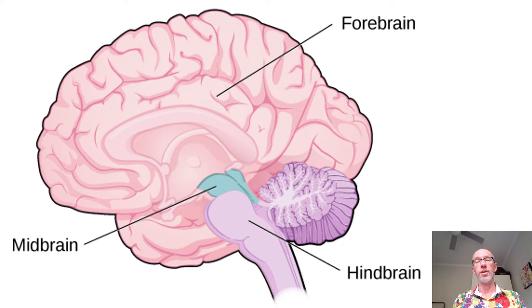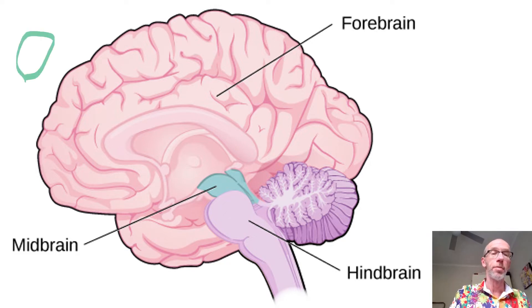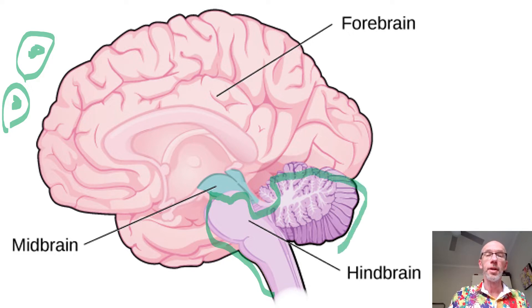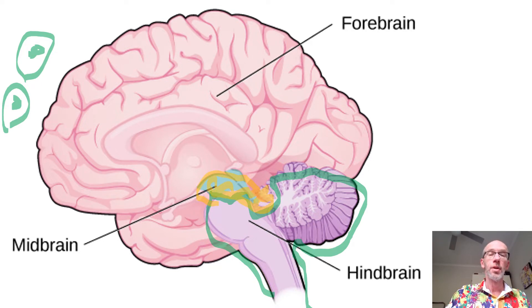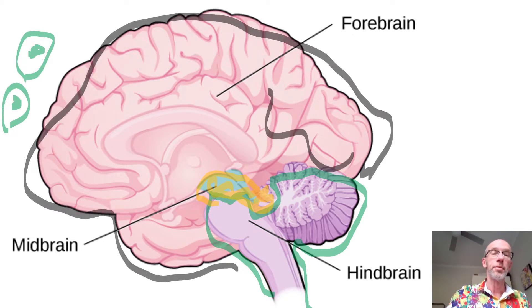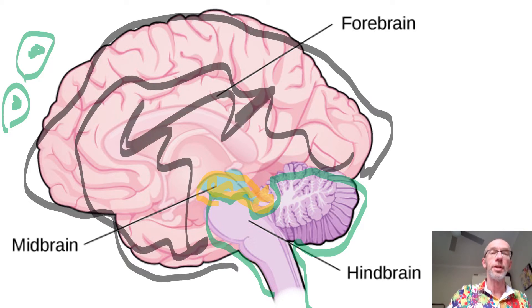So the three major brain areas — let's start simplistically by navigating where they are. We've got the front of the brain here, and there are the eyes. So here we've got the hindbrain towards the back, hind meaning back. Then we've got a midbrain area in the yellow here. And then the good stuff, the forebrain — this large wrinkly bit which covers all of this area here.